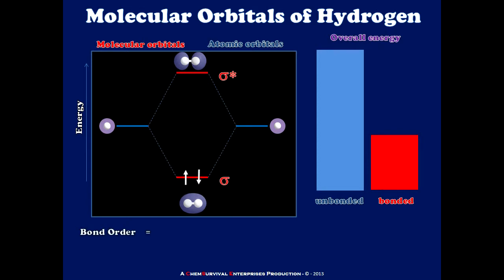Furthermore, I can calculate the order of the bond simply by taking the number of bonding electrons, subtracting the number of antibonding electrons, and dividing by two, of course, to acknowledge that there are two electrons involved in each chemical bond.